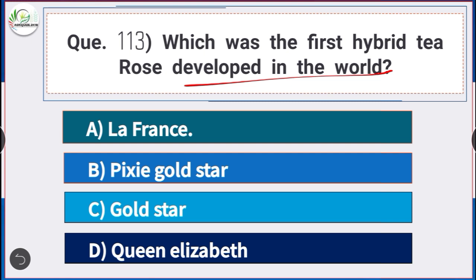Question number 113: Which was the first hybrid tea rose developed in the world? Answer is option A — La France. The first hybrid tea rose developed in the world was La France.